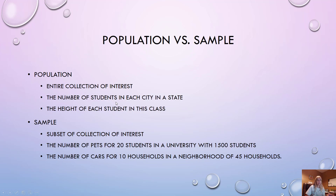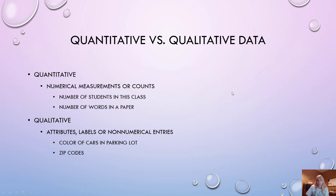If it didn't say they only got so many, it just means the total — like the height of each student in the class. A sample would be where you actually pick five out of the class, or the number of pets for 20 students in a university with 1,500 students. It's a subset out of a whole.